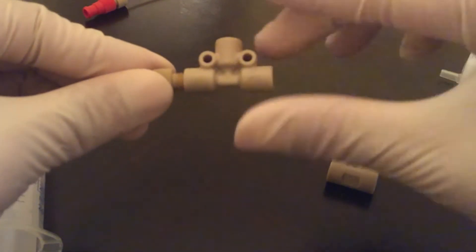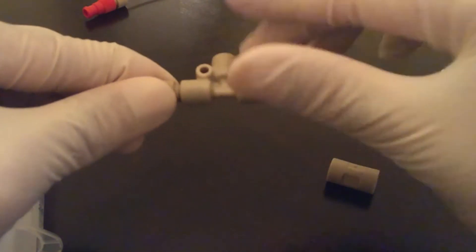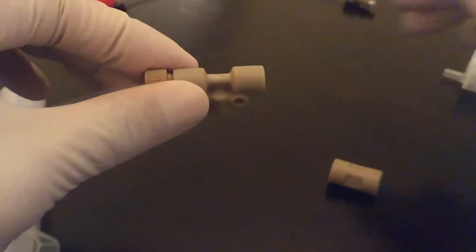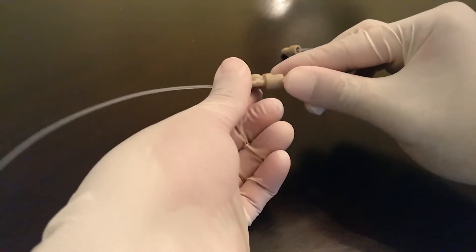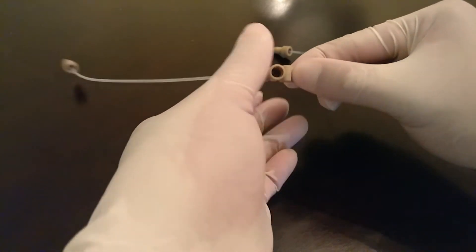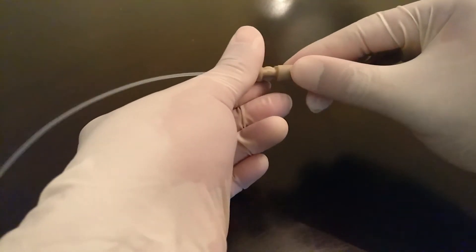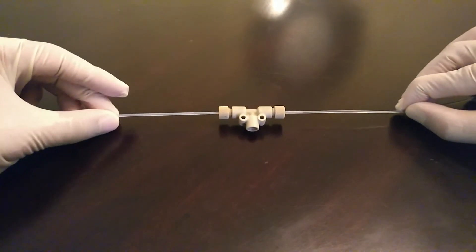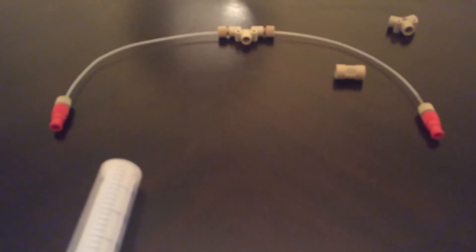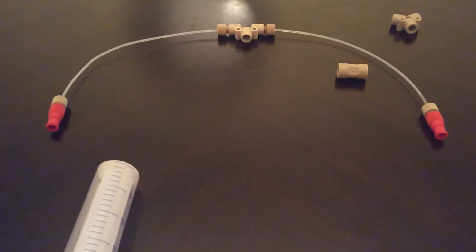Using the tubing connector already assembled in the previous step, simply screw these into the T-joint or the Y-joint. Finger tighten but do not strip the screw by tightening too hard. Make sure not to kink the tubing when you turn the joint.